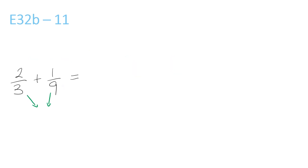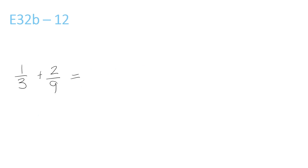These ones both go into 9 again. 3 times 3 is 9, so you have to times the top by 3, which is 6 over 9. Plus we bring the 1 over 9 over here, so that becomes 7 over 9. Final question: 3 and 9 both go into 9. 3 times 3 is 9, so 1 times 3 is 3, over 9. Plus 2 over 9, which is equal to 5 over 9.